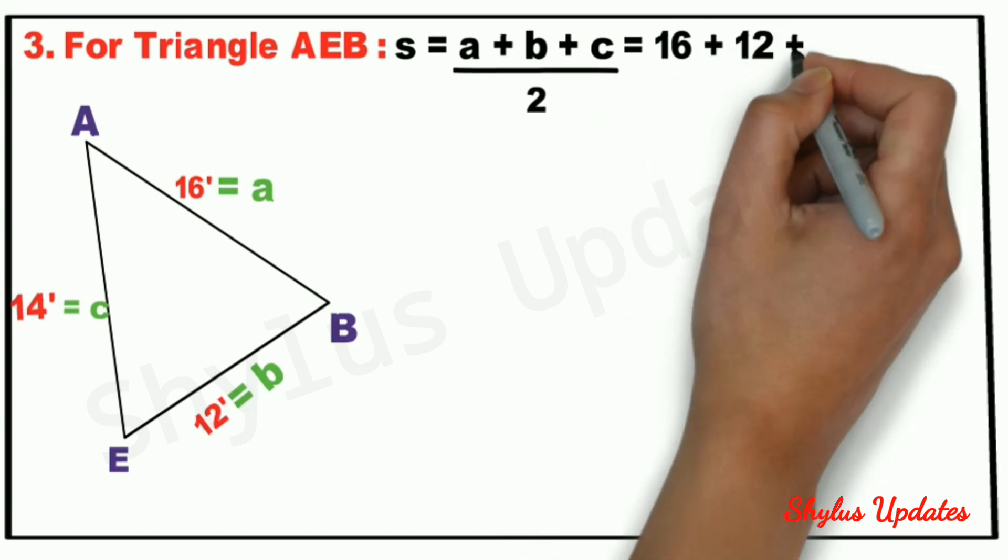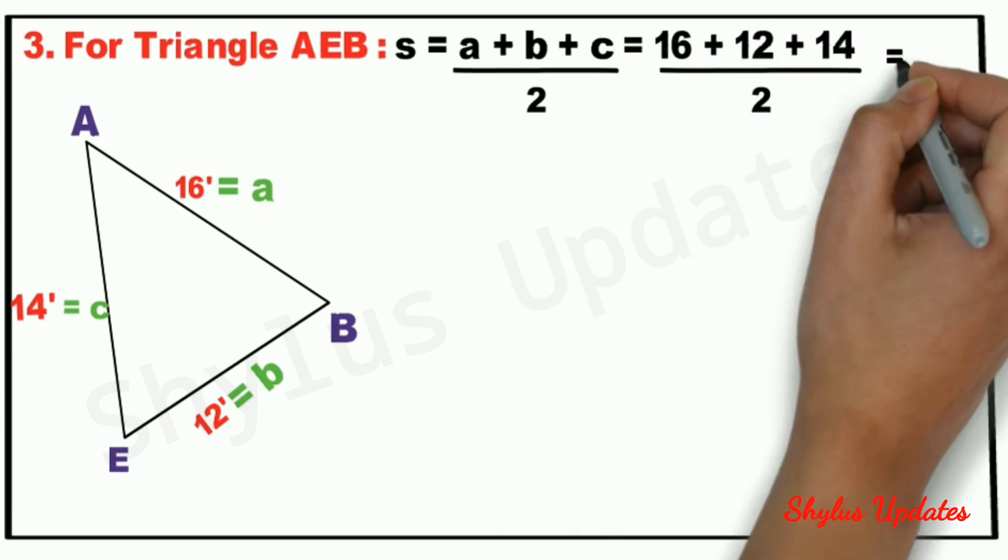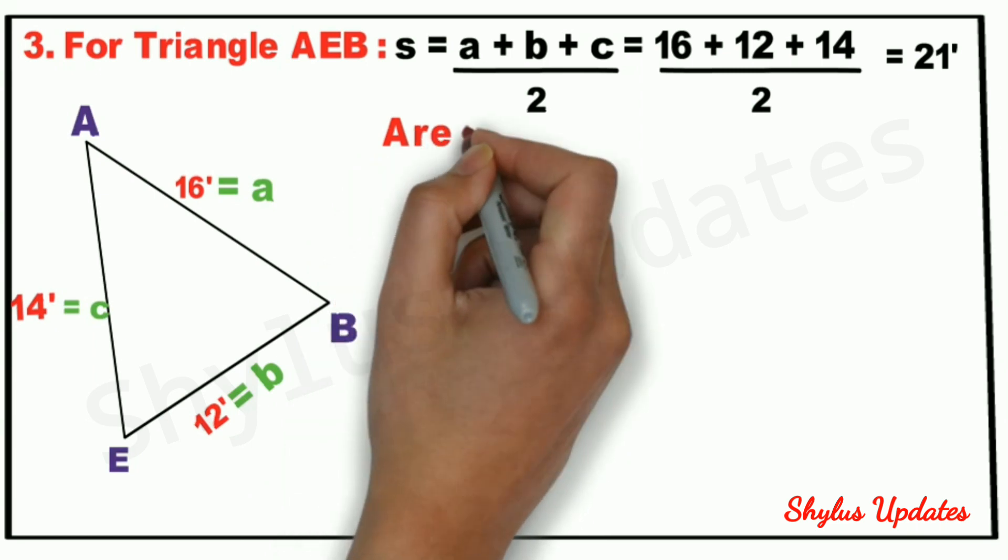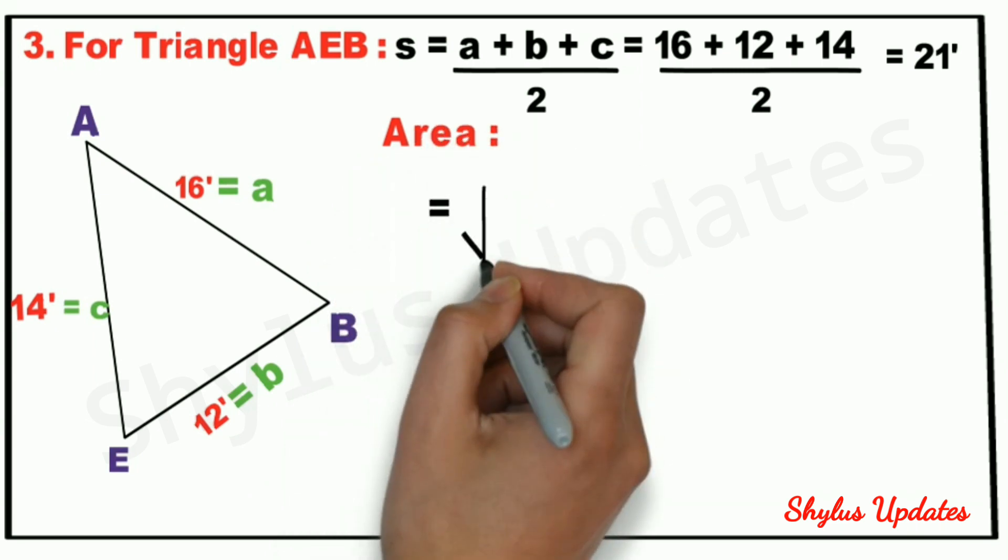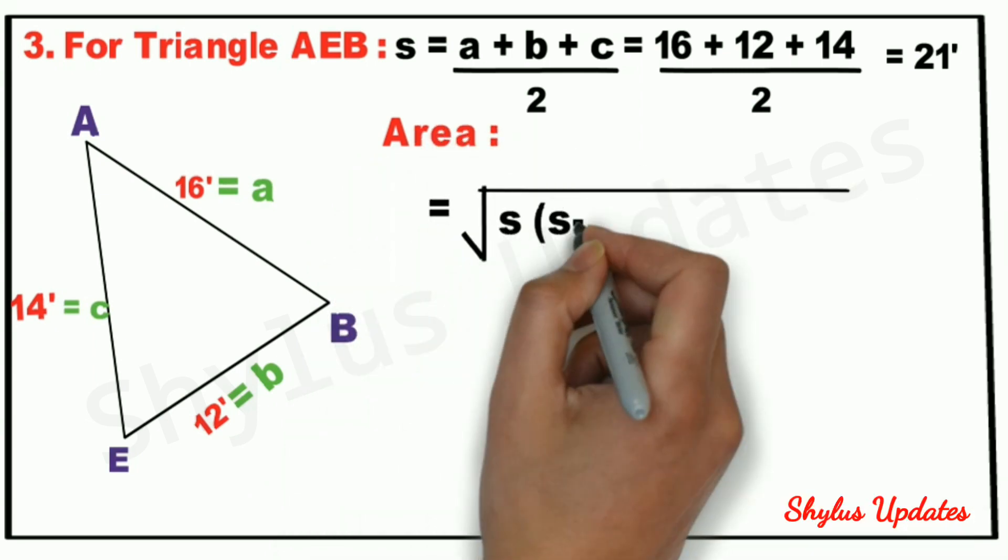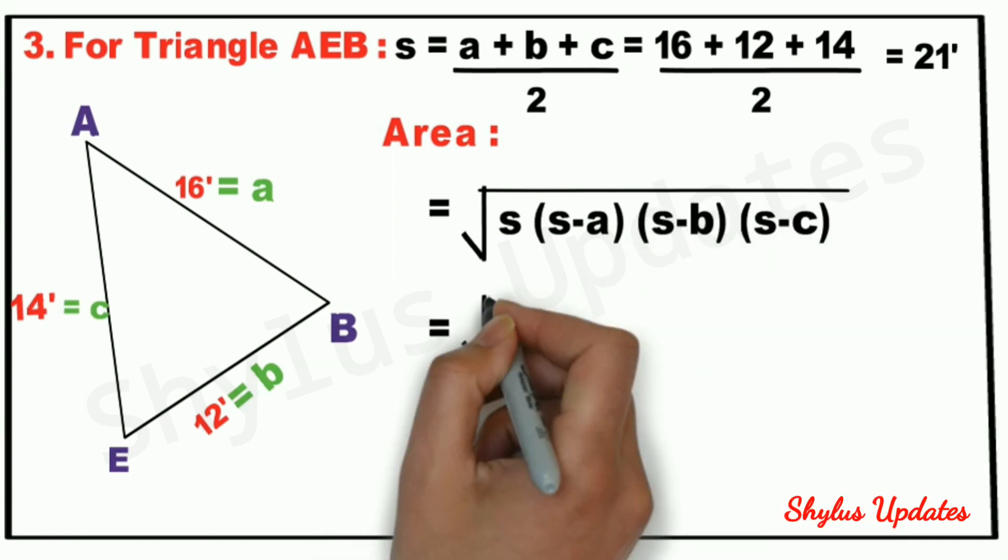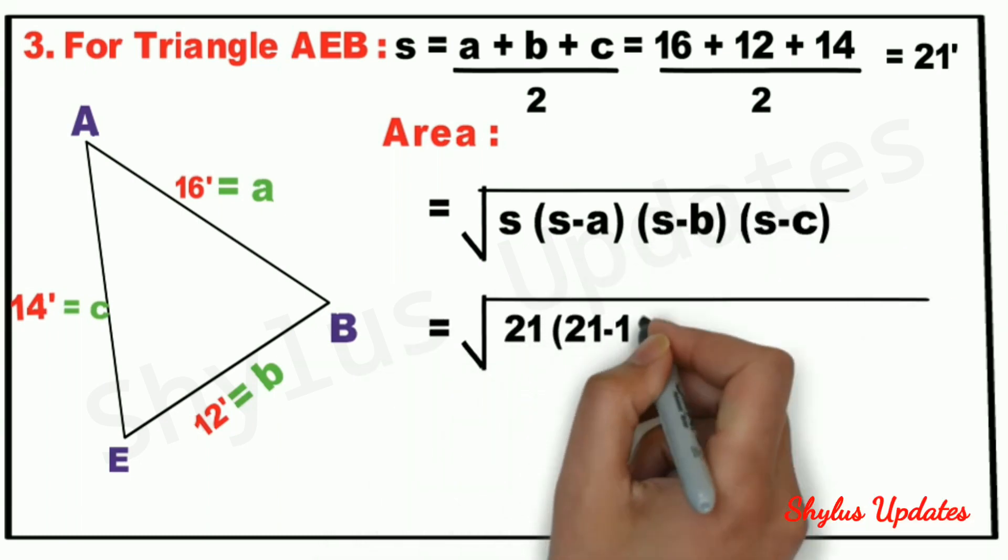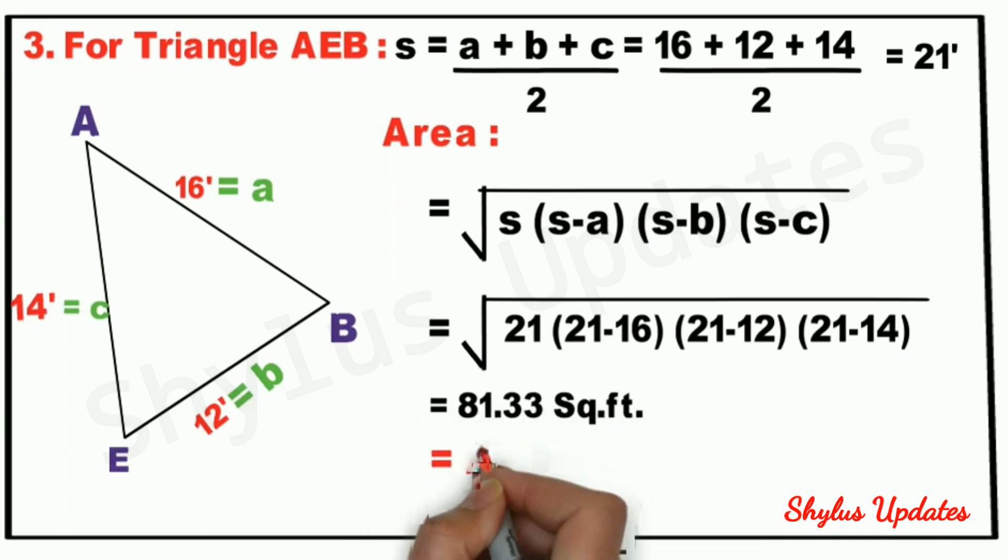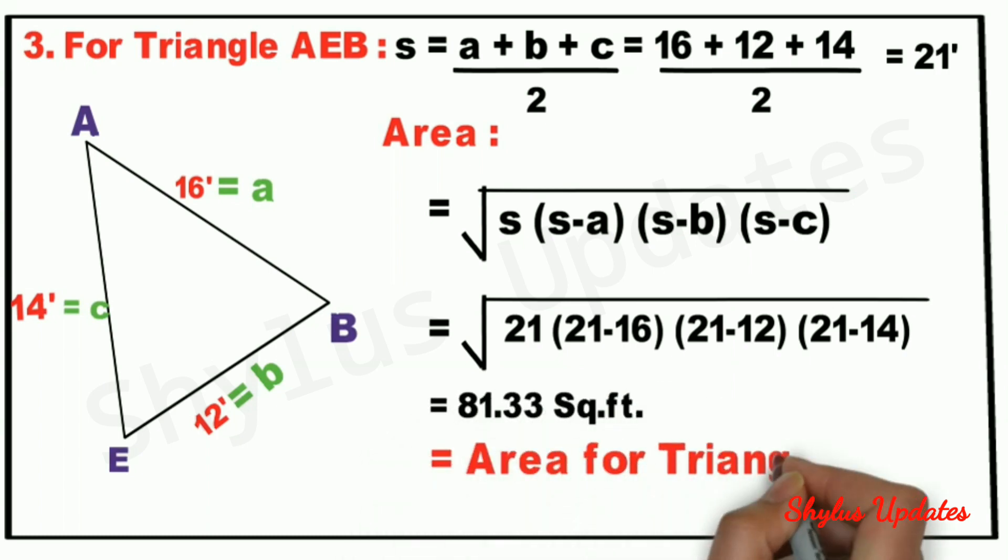Area equals square root of s into s minus a into s minus b into s minus c. When we substitute the values, we get 81.33 square feet. This is the area for triangle AEB.